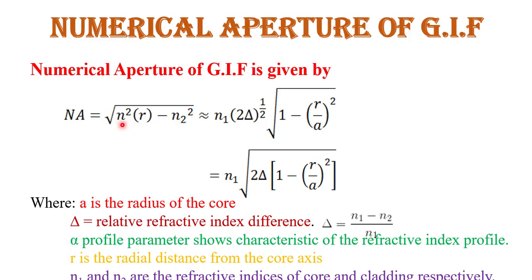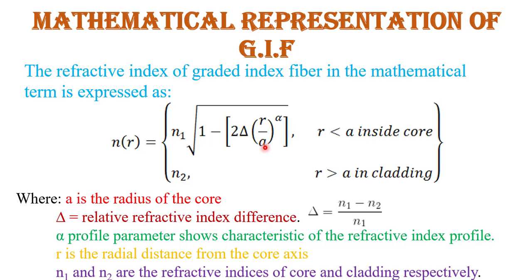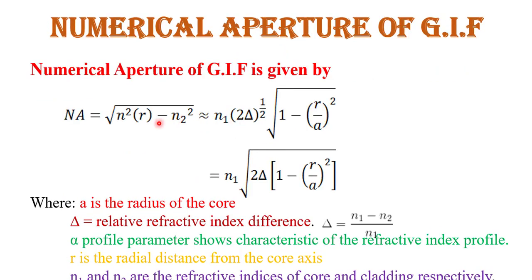Substituting n(r) = n1√(1 − 2Δ(r/a)^α) into the numerical aperture formula and solving, we get the final formula: NA = n1√(2Δ) × √(1 − (r/a)^α). Here, a is the radius of the core, Δ is the relative refractive index difference calculated as Δ = (n1 − n2)/n1, α is the profile parameter, r is the radial distance from the center, and n1 and n2 are the refractive indices of core and cladding respectively.